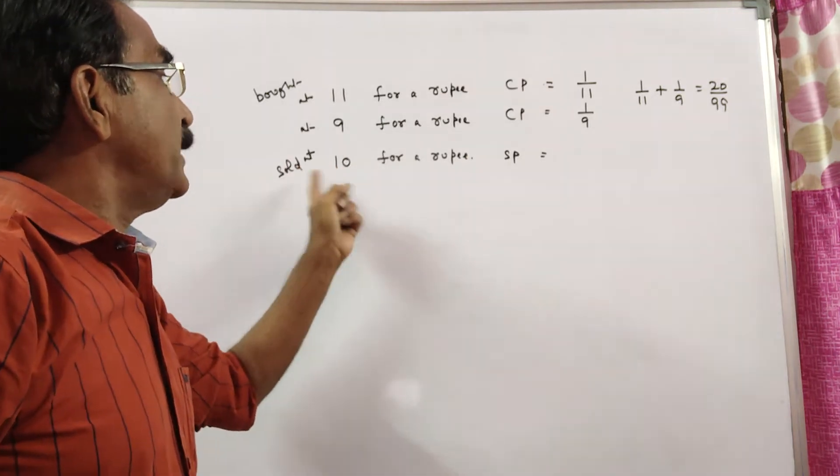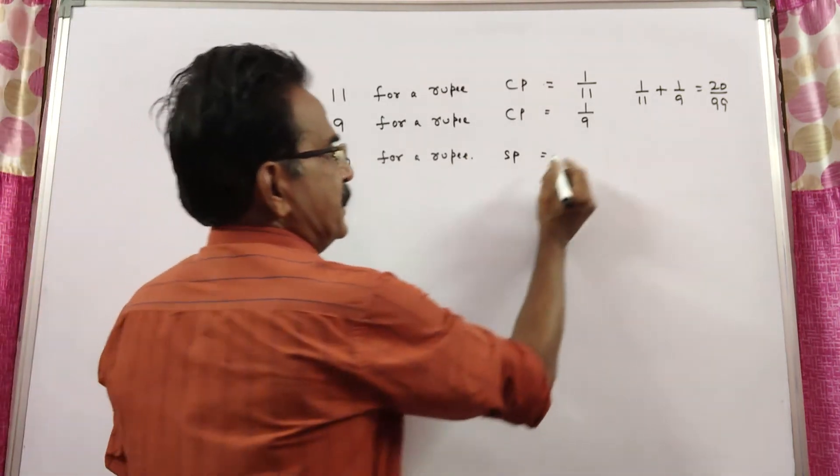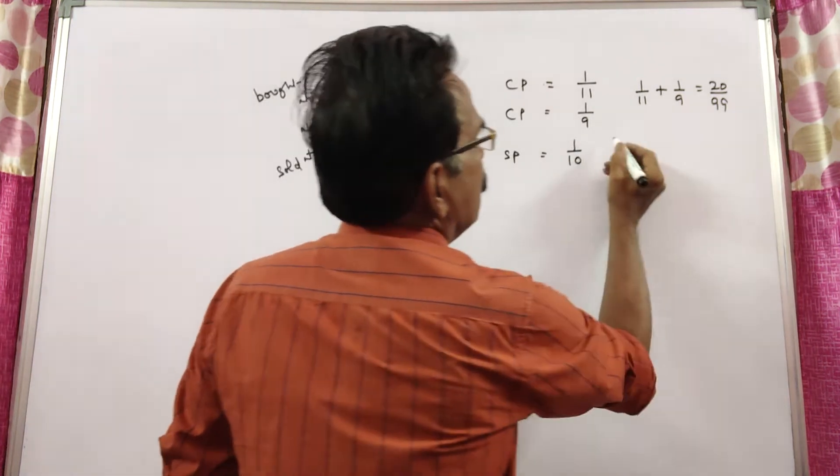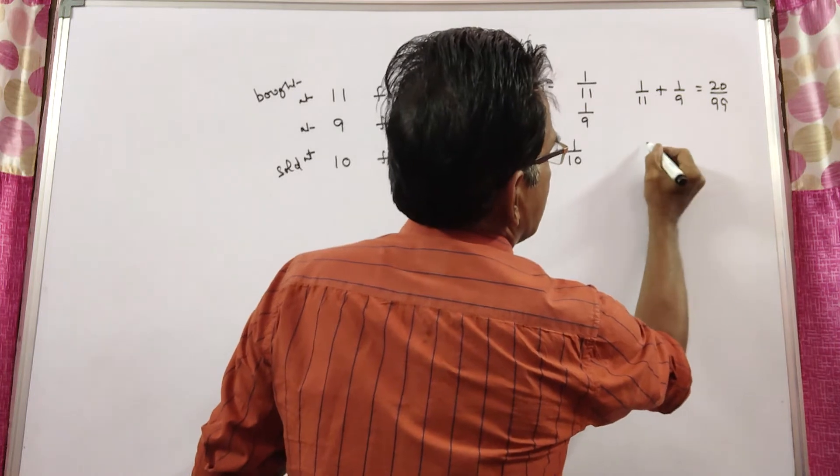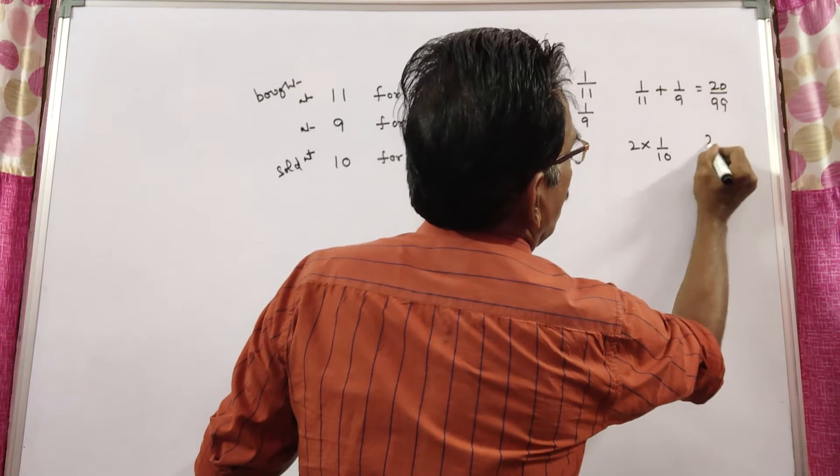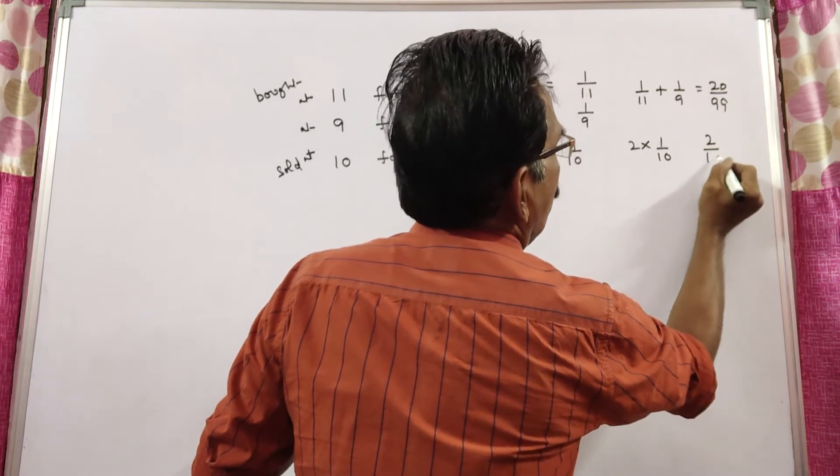Let us see the selling price. So sold it at 10 for a rupee. That means selling price of each orange is 1 by 10. Selling price of 2 oranges is 2 into 1 by 10, that is equal to 2 by 10.